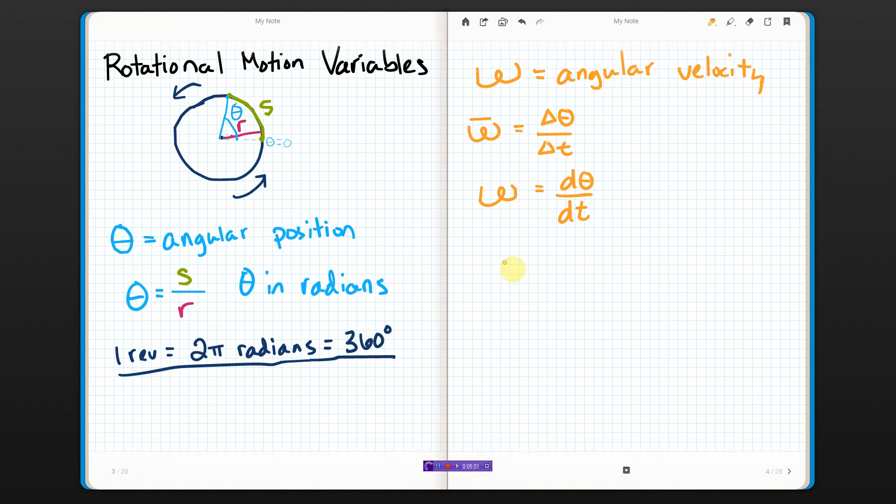We actually have the next one. If we had taken velocity and derived it, you would have got acceleration. We have a similar thing for angular, and this one is alpha. Alpha kind of looks like a fish, but the tail is open and it's horizontal. This is angular acceleration.